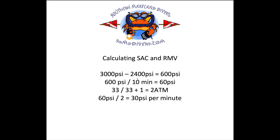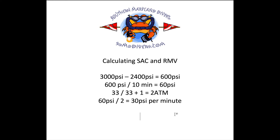After we get the SAC rate, what we need to do to accurately use it at depth is get a respiratory minute volume — that's the important number: how much cubic feet of air you breathe. We've broken it down to psi, but psi changes from tank to tank in volume. PSI equals volume, and 1 psi in an aluminum 80 tank is completely different from a steel 120 or a low-pressure steel tank — the volume is completely different. The next step is calculating your respiratory minute volume, and to do that we need to know what tank you were using during your SAC swim.